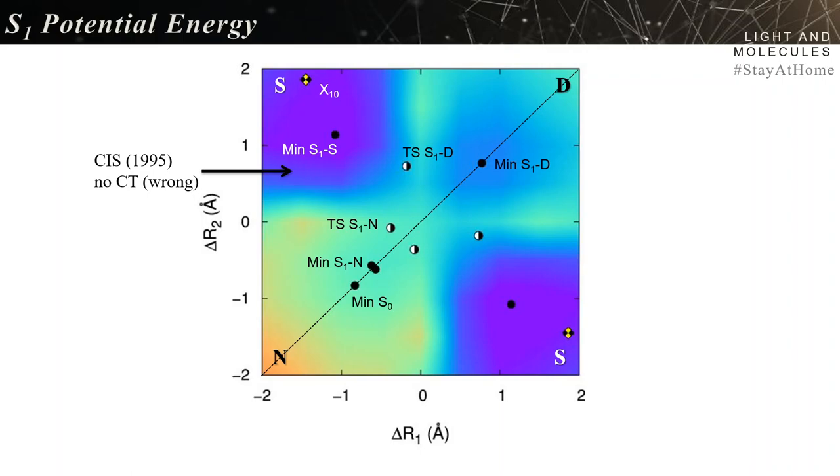In 1995, when Zewail and his team did the experiments, they got a big mass of data that must be deconvoluted using some model. They based this deconvolution on CIS calculations using small active space that didn't show any CT, any charge transfer. They based their interpretation on wrong theoretical calculations, and that was a major factor inducing them to the hypothesis of the stepwise transition.